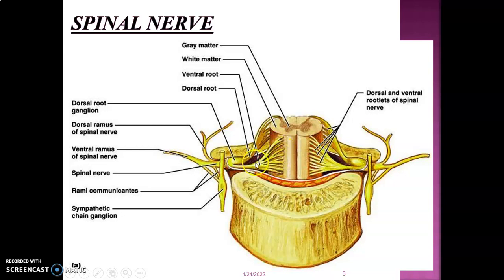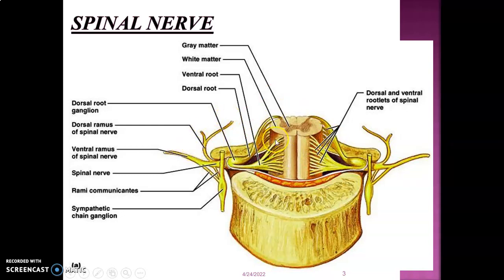A root can be either motor or sensory, but a nerve is both motor and sensory. After forming a spinal nerve, the nerve divides into anterior rami (ventral rami) to innervate muscles within the ventral compartment, and posterior rami to innervate structures on the posterior surface of the body.